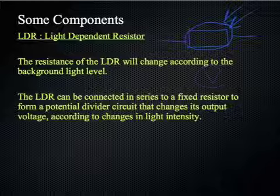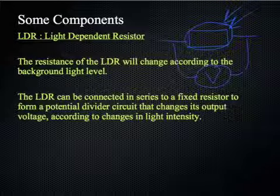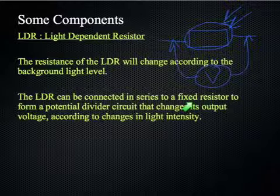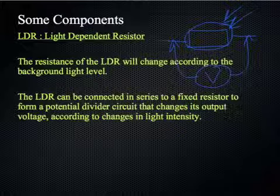So you should always imagine a voltmeter across it and what kind of voltage or potential difference there will be depending on the light intensity. This is particularly useful because when you connect it to a fixed resistor in series with a fixed resistor, you form a potential divider circuit that changes its output voltage according to changes in light intensity.